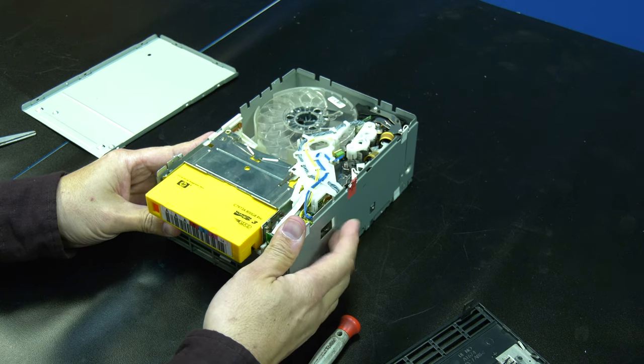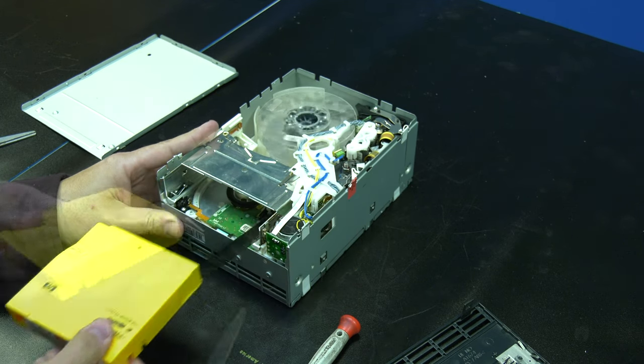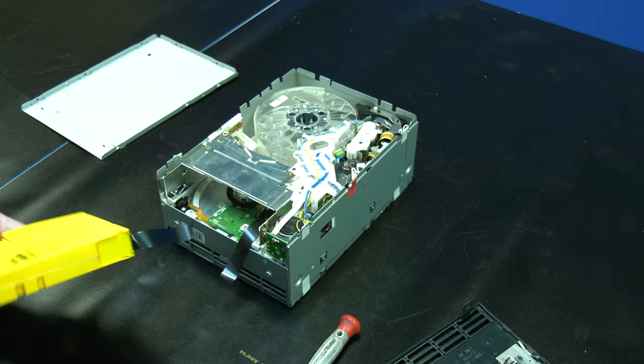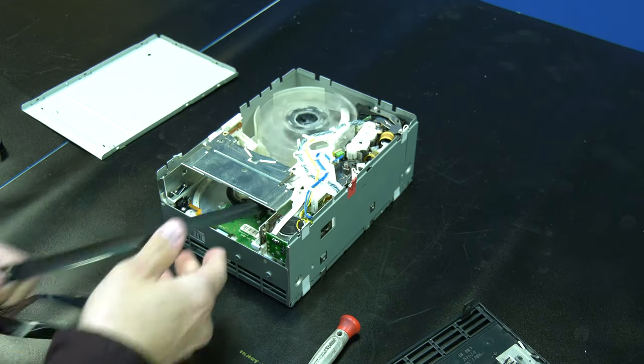Once you have the tape cartridge out, you can then proceed to cut the tape media. Then you can proceed to pull out the remainder of the tape media on the spool by hand.